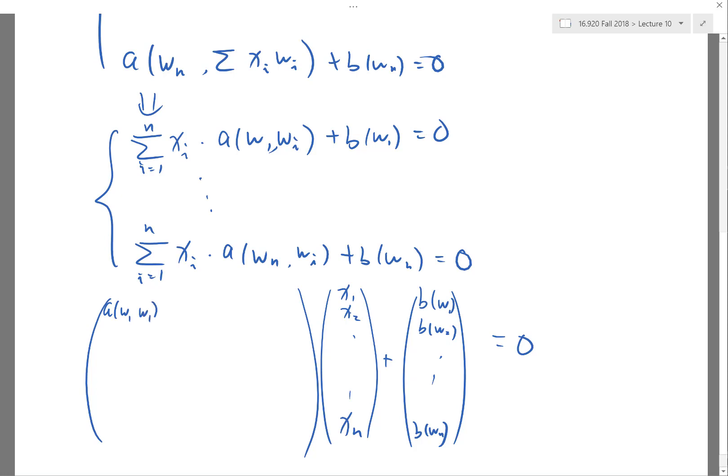The matrix is simply: A(W1,W1), A(WN,W1), and A(W1,W2), etc., up to A(W1,WN) and A(WN,WN).